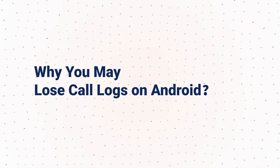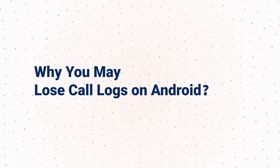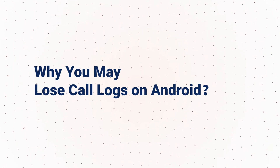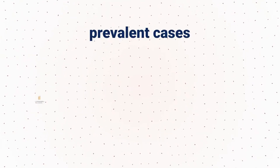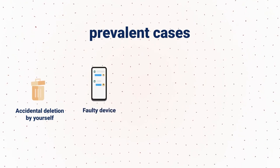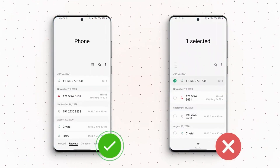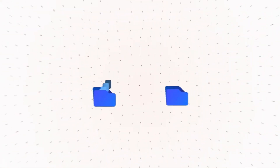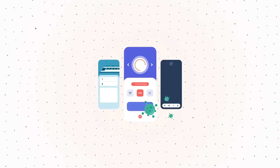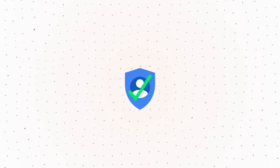Although we can always find a way to retrieve deleted call histories, we better nip it in the bud. Knowing why call logs can be misplaced can help decrease the chances of mishaps. Some of the most prevalent cases are accidental deletion by yourself, faulty device, viruses, and corrupt storage. Here are some tips: make sure to manually and selectively delete call log history instead of selecting the 'Delete All' button. Keep copies of essential data, stop downloading from untrustworthy sources, and install reliable antivirus software.